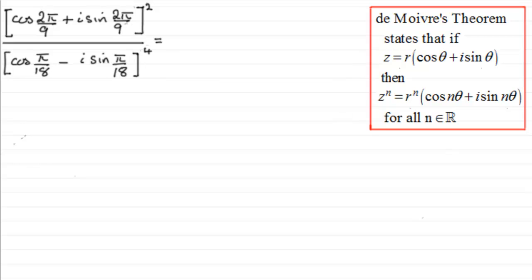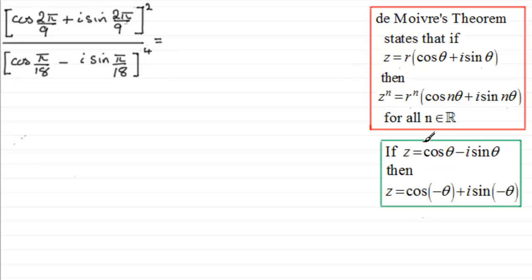And we should be familiar with this result as well, that if z is equal to cos θ minus i sine θ, I showed you in an earlier video, then this was equal to z equaling cos of negative θ plus i sine negative θ. So we're going to use this result first of all on the bottom here.